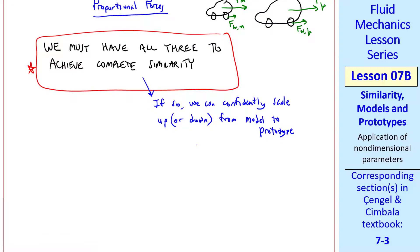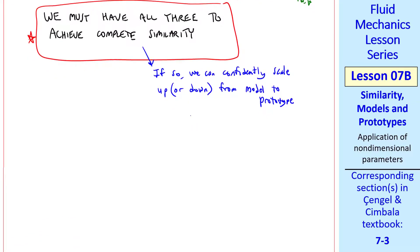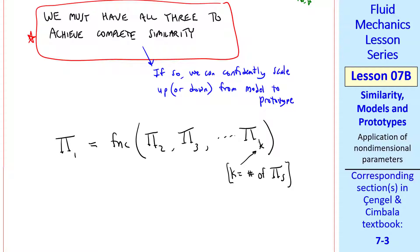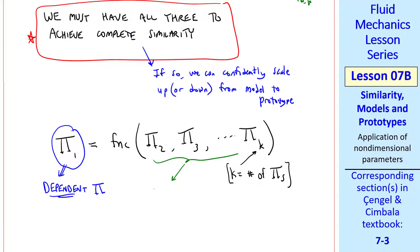In general, we'll write a functional relationship between various pi's, where we recall that pi is a non-dimensional parameter. What I mean is pi 1 is a function of pi 2, pi 3, etc., up to pi k, where k is the number of pi's in the problem. Pi 1 is always the dependent pi, while the other pi's are the independent pi's.